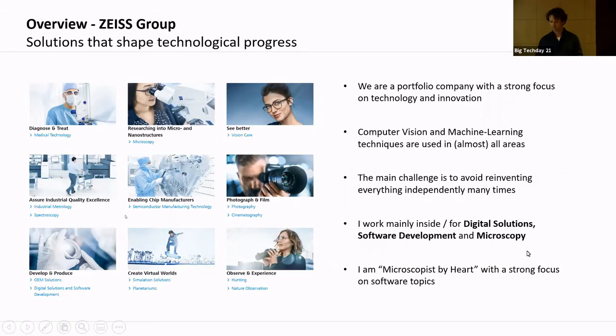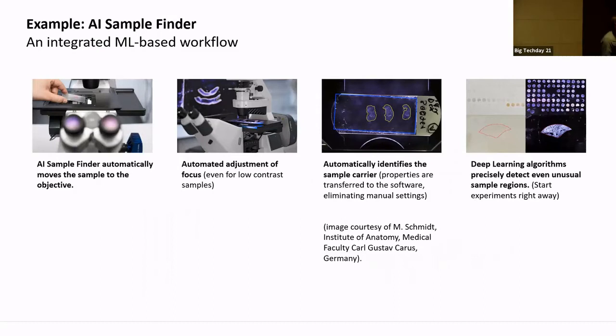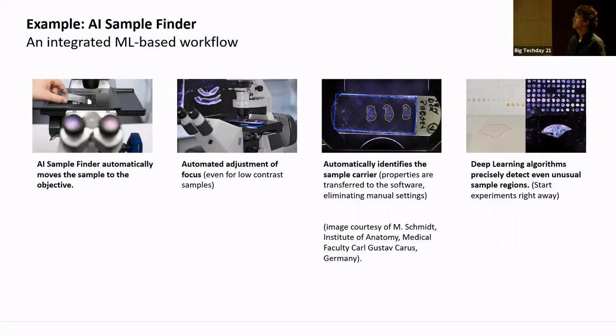Here is one example of a machine learning solution at Zeiss I want to talk about — it's called AI Sample Finder. It uses machine learning for ease of use. Basically, you put the sample on your microscope, press a button, wait, and then it's ready to acquire images. Let me show you a video on the next slide.